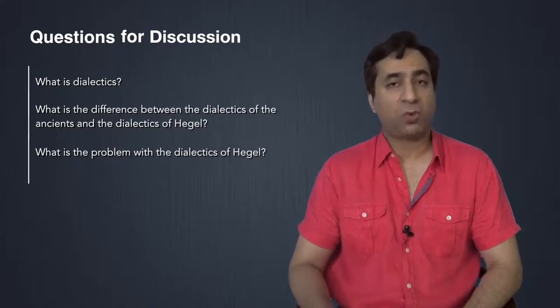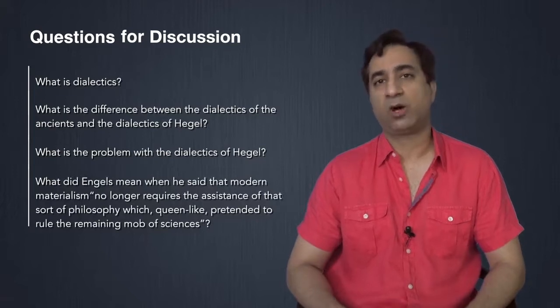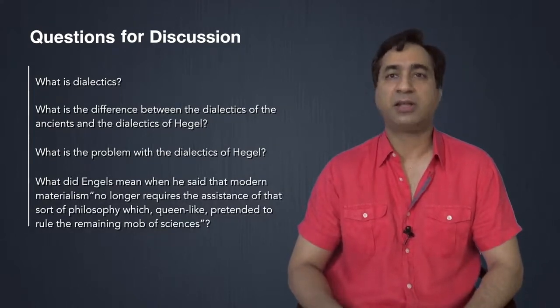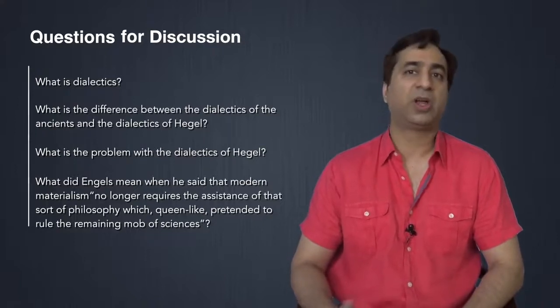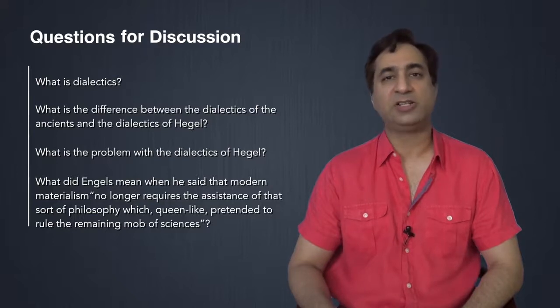We'll try to understand what are some of the problems with respect to the dialectics of Hegel. And we'll also try to understand what Engels meant when he said that philosophy is coming to an end, when he said that modern materialism no longer requires the assistance of that sort of philosophy which Queen-like pretended to rule the remaining mob of sciences.